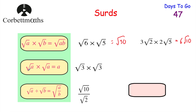Next, if we've got root A multiplied by root A, that's equal to A. So for instance, if we had root 3 times root 3, that would be root 9, and the square root of 9 is 3. So root A times root A is equal to A.